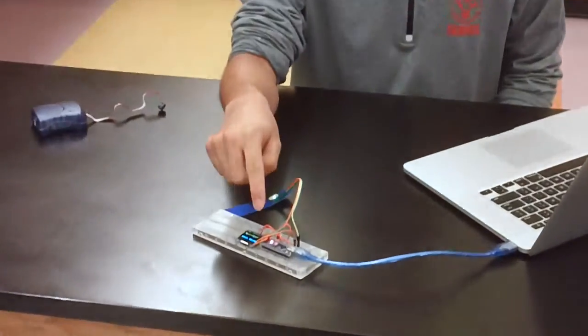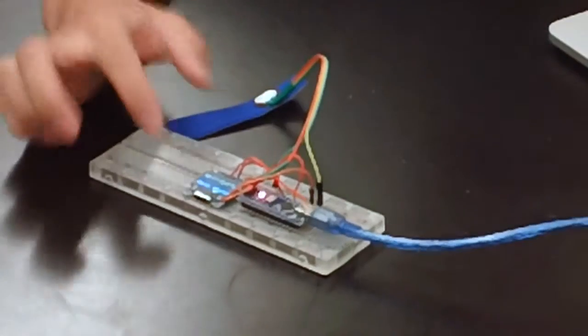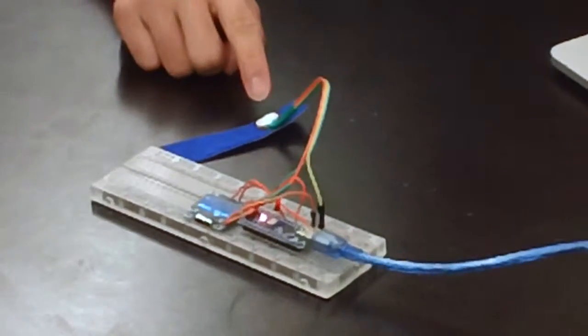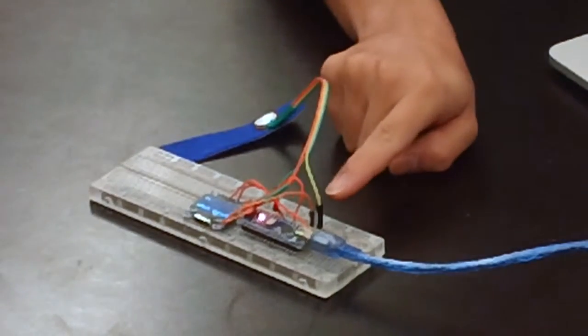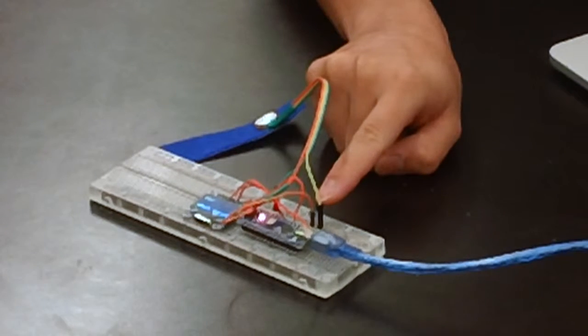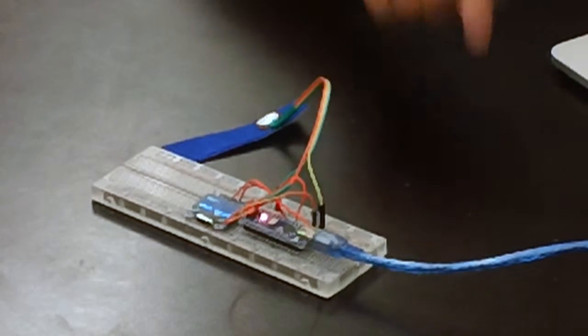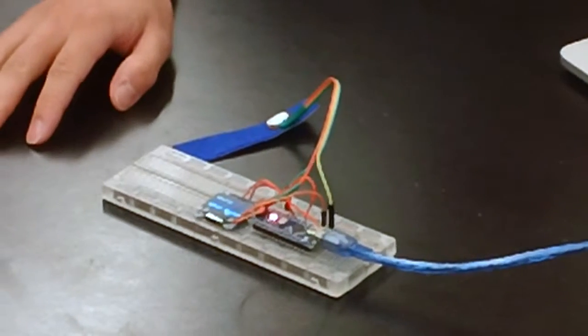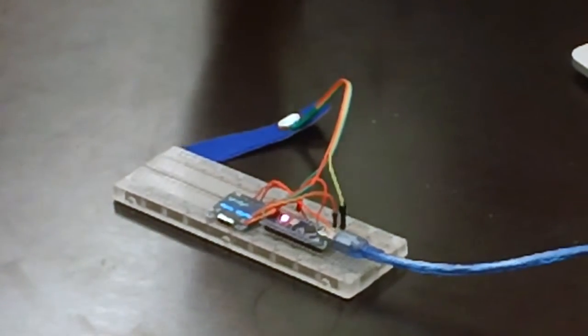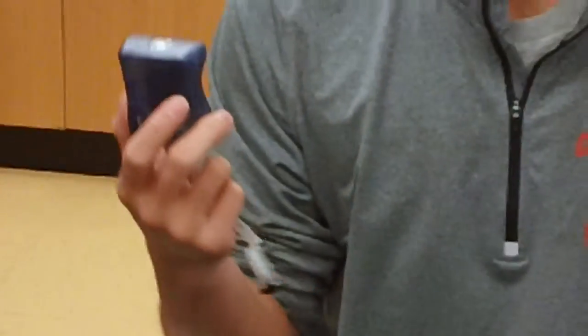Right now, I'm powering my Arduino through my laptop and both the OLED display and the pulse sensor are connected to the 3.3 volts pin on the Arduino. And I'm also using this AVR programmer in order to upload codes to my Arduino.